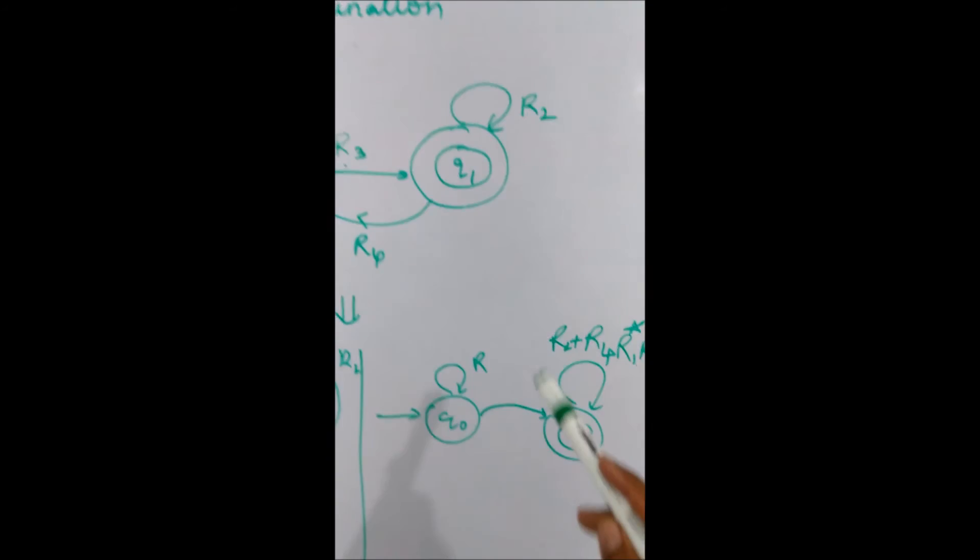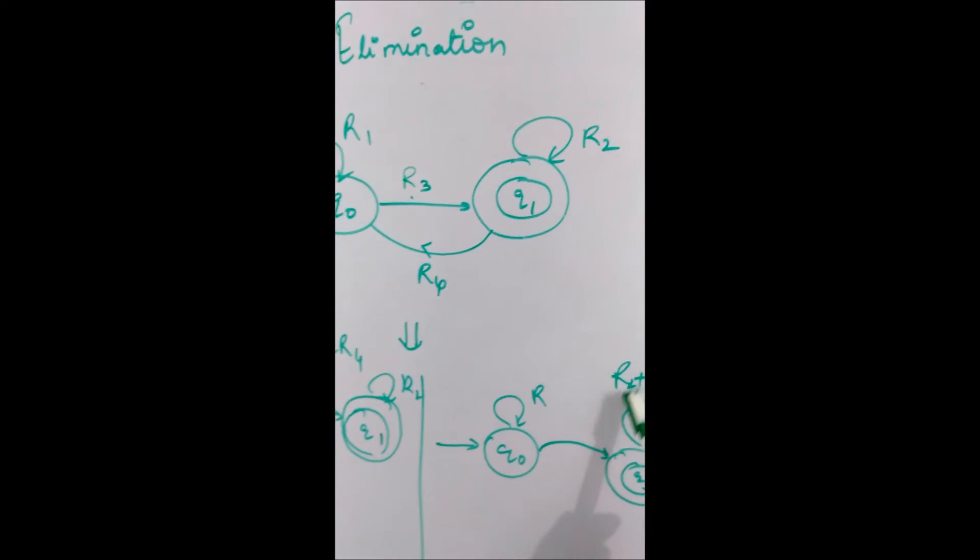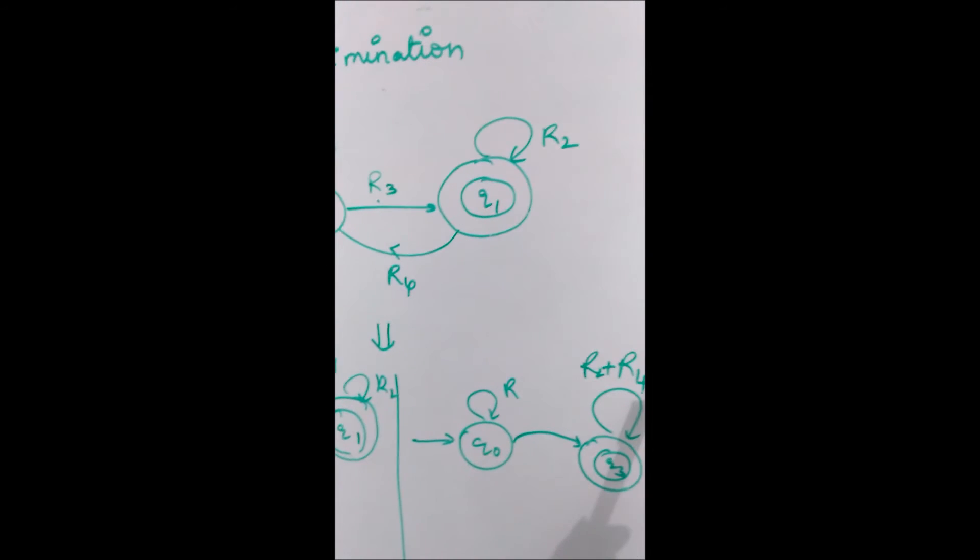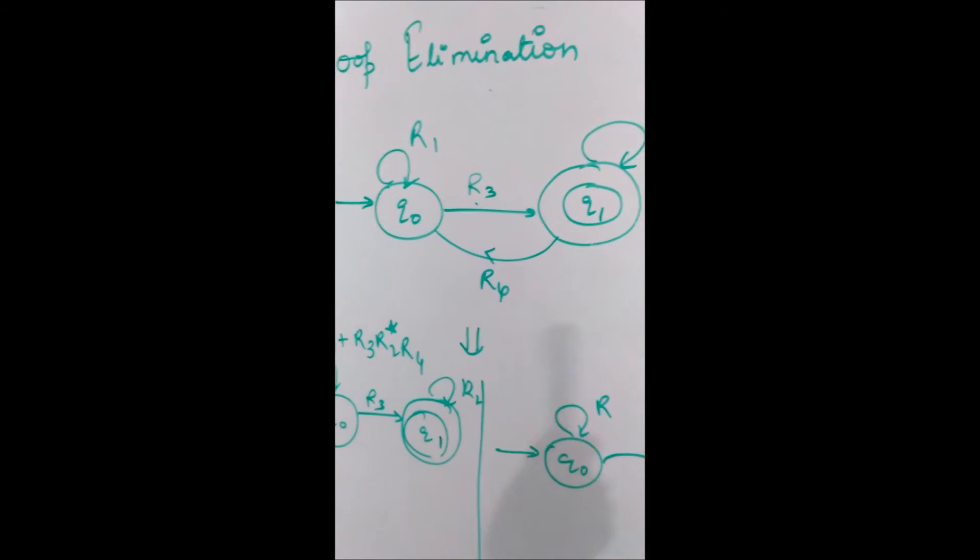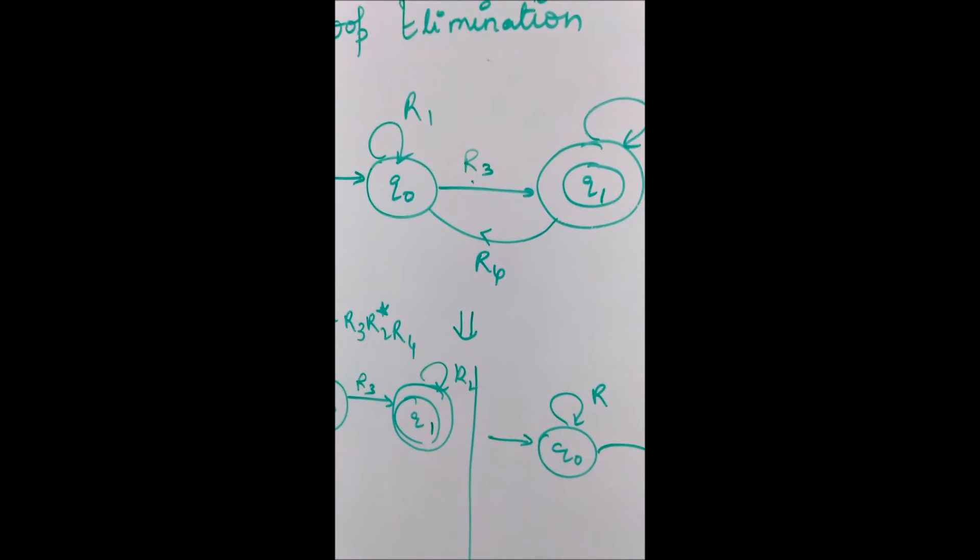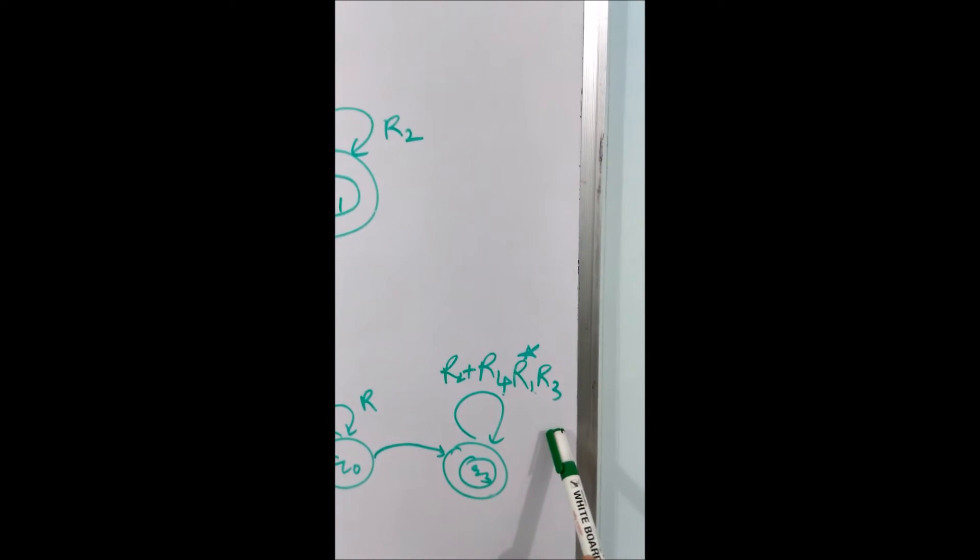We can transfer that to q1 which will be r2 as it is. Then it is going to r4 and then r1 star because it is making a self loop. It can occur more than once or more than 0. Then it is coming back to q1 state.